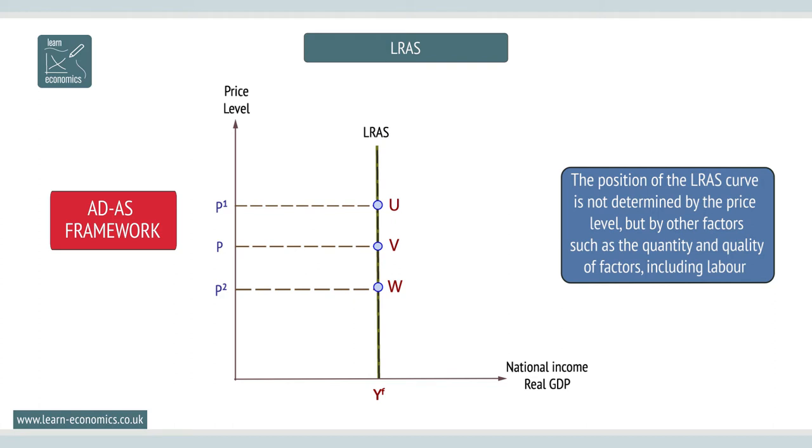In the long run, and assuming normal levels of inflation between 2% and 5%, the price level has little bearing on output, while the quantity and quality of factors, including labour, the use of technology, and the productivity of factors, do have an influence.